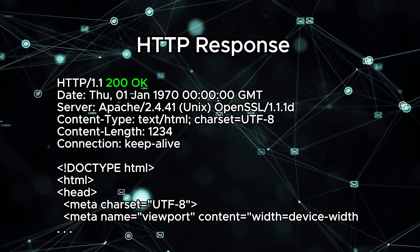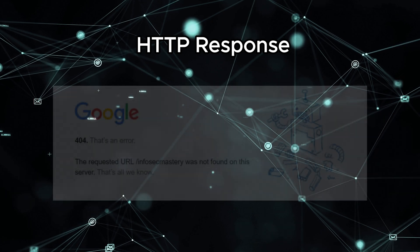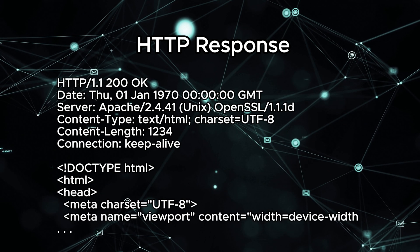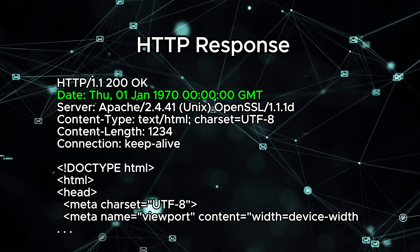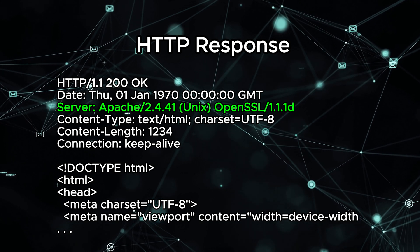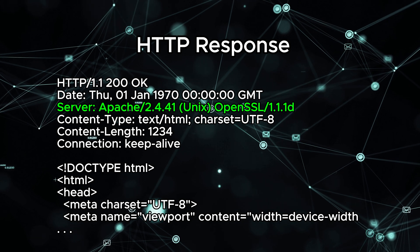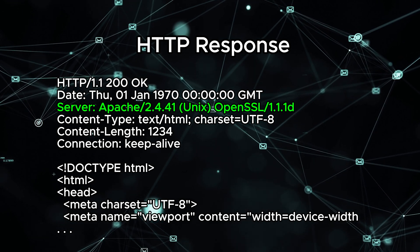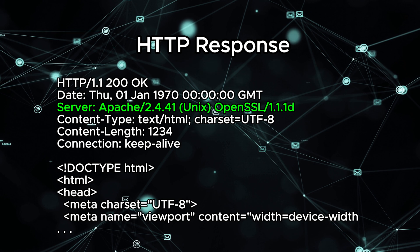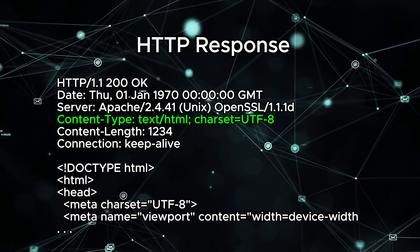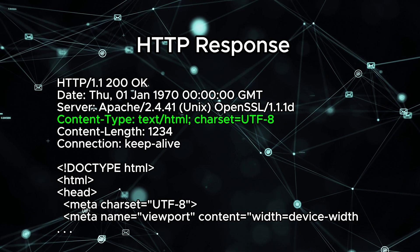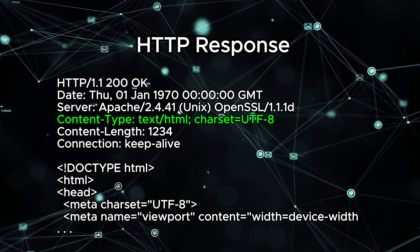HTTP status codes vary depending on how your request has been interpreted. For example, if you send a request to a page that does not exist, you will probably get the infamous 404 Page Not Found response. The next header is the date, which is the date on the server itself. Next up is the server header, which can be very useful for us in the enumeration phase of a pen test. For example, if the server header provides version information, we might be able to find out if the server is vulnerable to a known attack that we can exploit and gain access to the server. Next up is the content-type, which indicates in what format the server has responded.